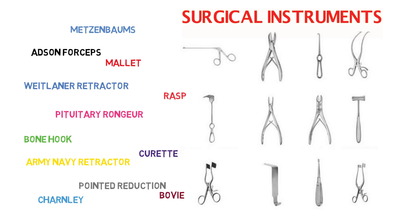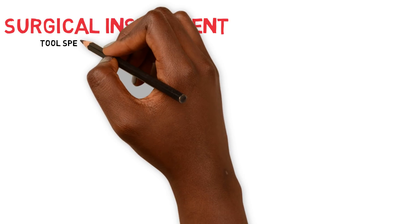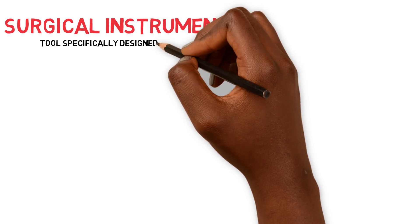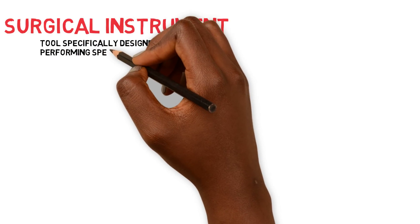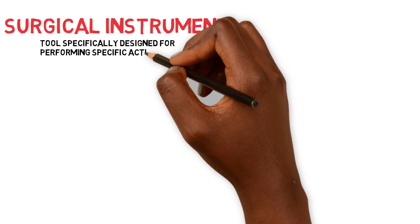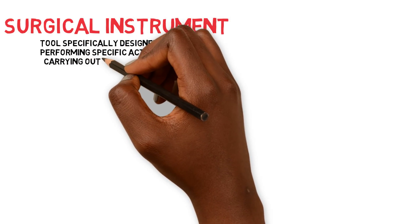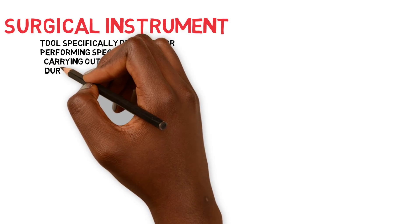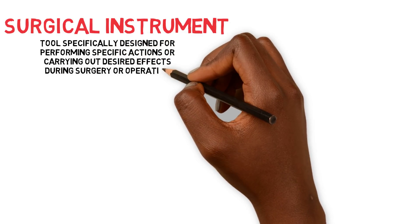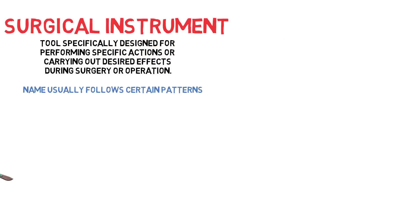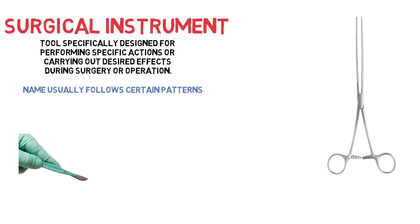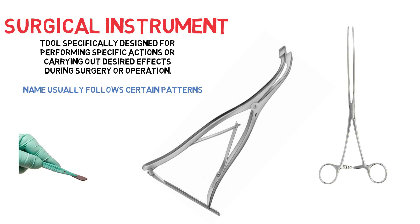This video is to talk about some of those surgical instruments, what they are called, and what they are used for. A surgical instrument is a tool specifically designed for performing specific actions or carrying out desired effects during an operation. The name of these instruments usually follows certain patterns, or sometimes they are named after the person who invented the instrument.